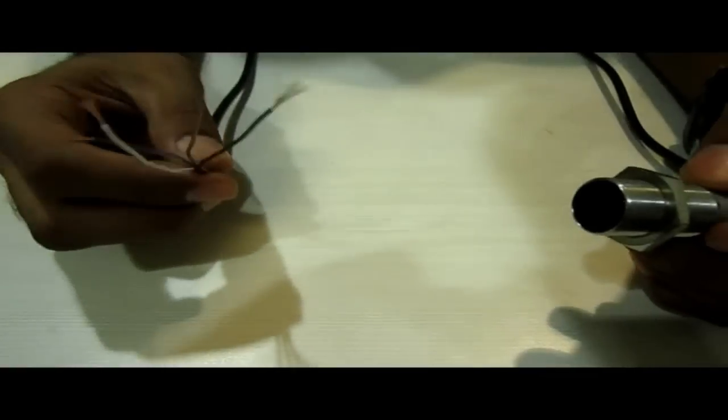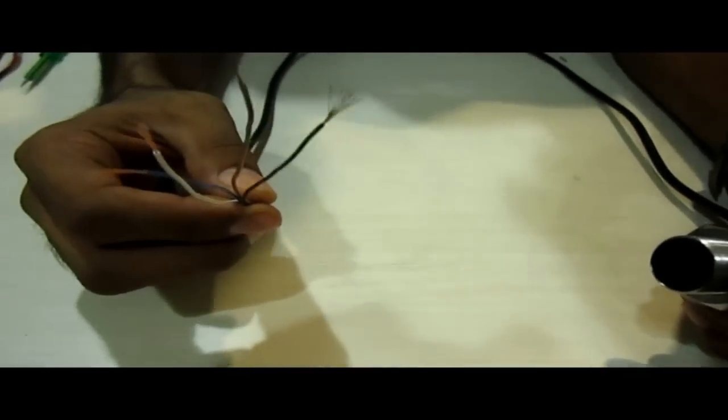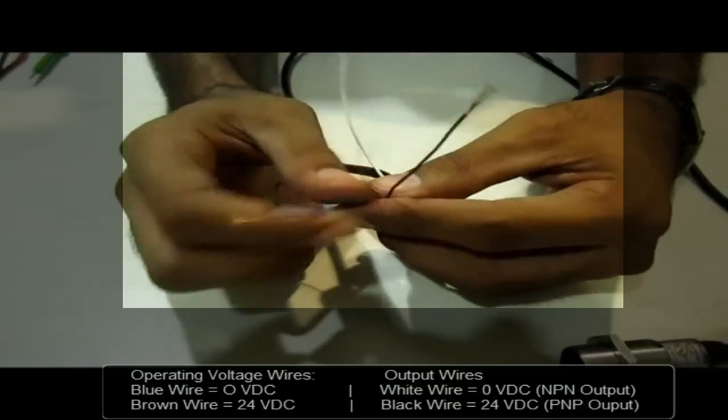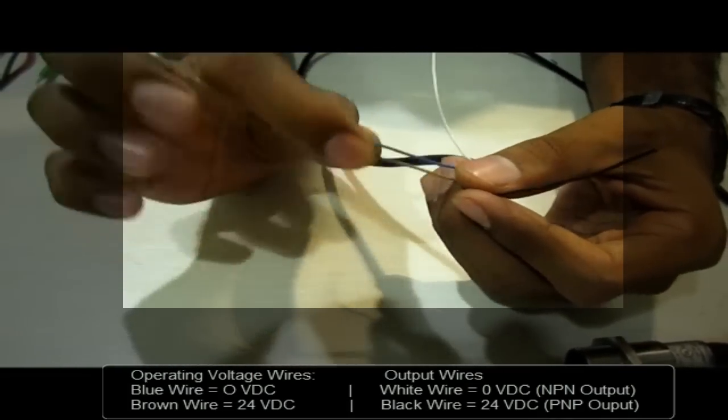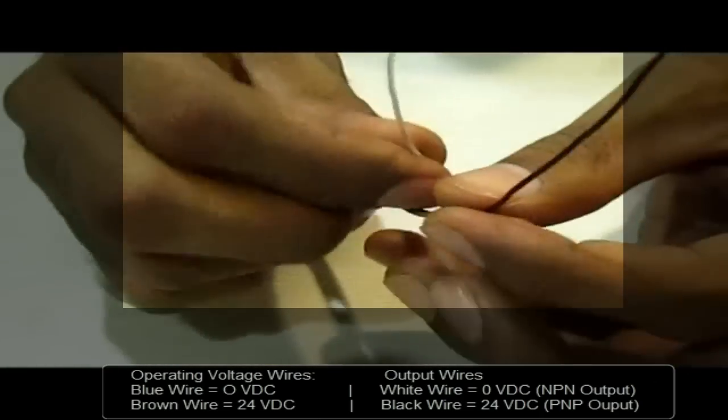So we have a 4-wire capacitor sensor which means it's a universal sensor. Now here you can see again we have blue wire to give 0 volt and brown wire giving 24 volt. These are the operating voltage wires and these two wires are output wires.